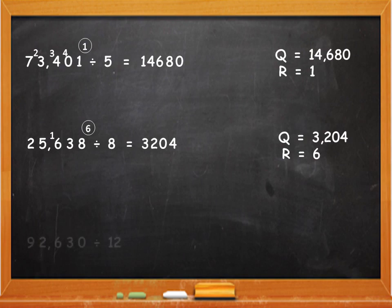One last example. 92,630 divided by 12. The first digit, put the equal to sign. The first digit 9 cannot be divided by 12 since it is smaller, so you take 9 and 2 together. 92 divided by 12. 12 will go 7 times in 92. 12 sevens are 84 and 92 minus 84 is 8.